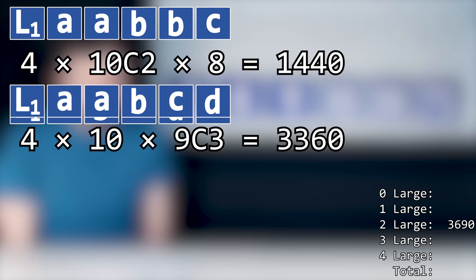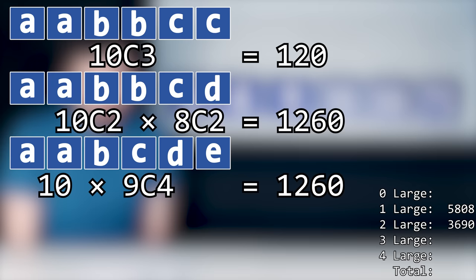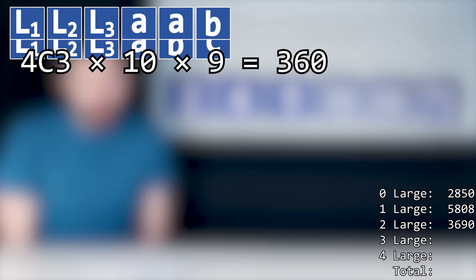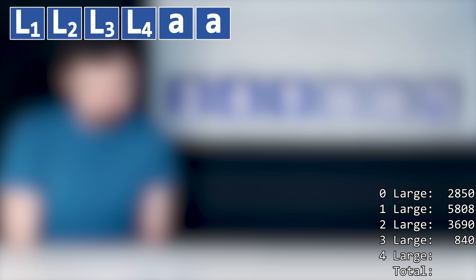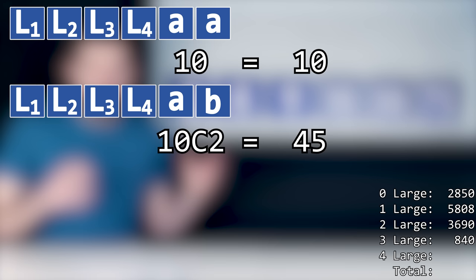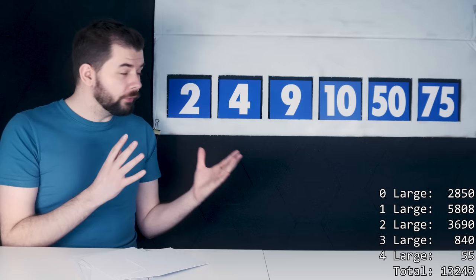We can use a similar approach to count the cases with one large number. Consider the cases with two pairs of smalls, one pair of smalls, and no pairs of smalls. A similar approach with no large numbers, considering the cases with three pairs, two pairs, one pair, and no pairs of smalls. Again, with three large numbers, considering the cases with one pair and no pairs of smalls. And finally, with four large numbers. Note that if four large numbers are selected, then there is only one option for how those large numbers are configured. You just get all four of them. And for the smalls, consider the cases of one pair and no pairs of smalls.